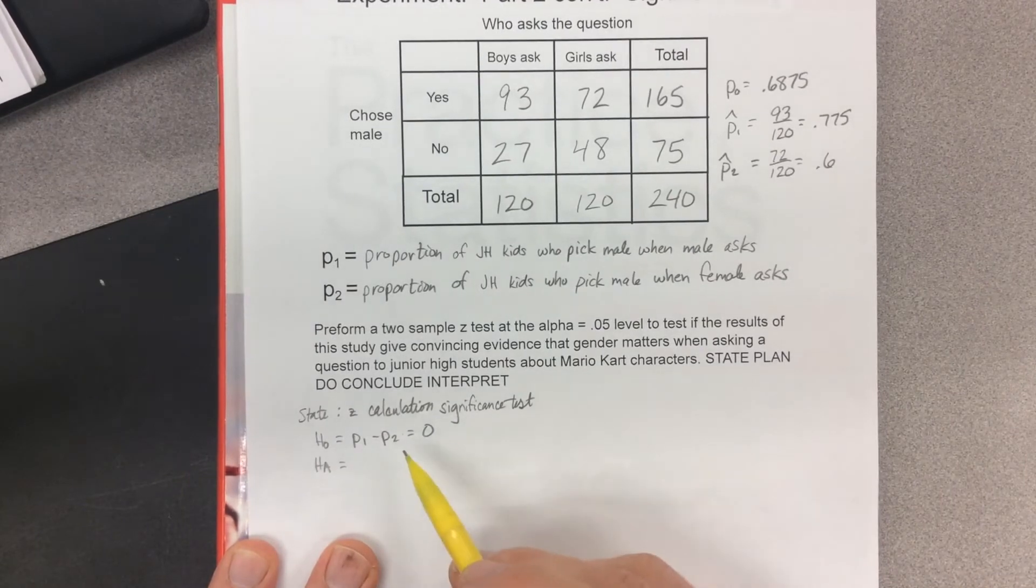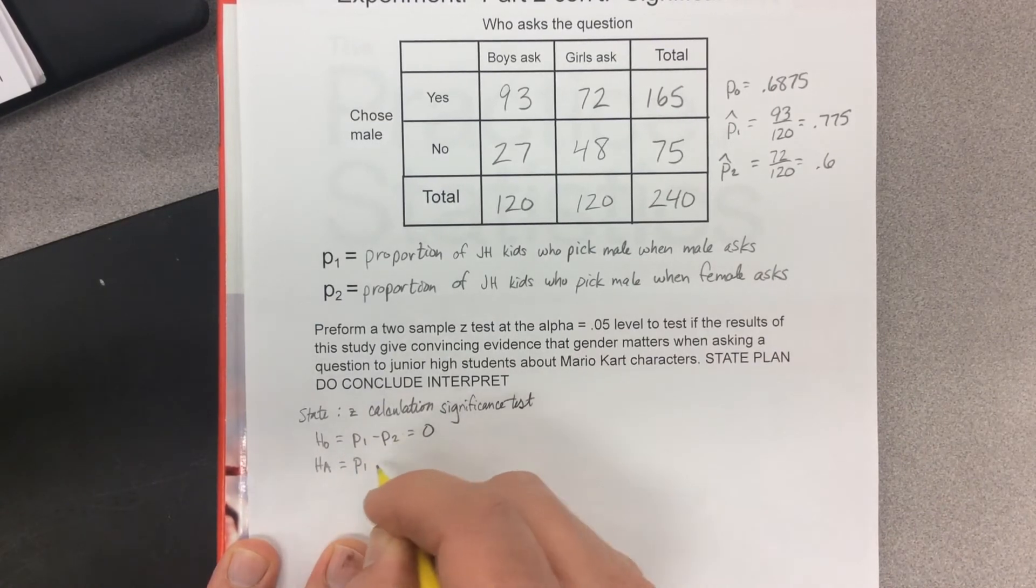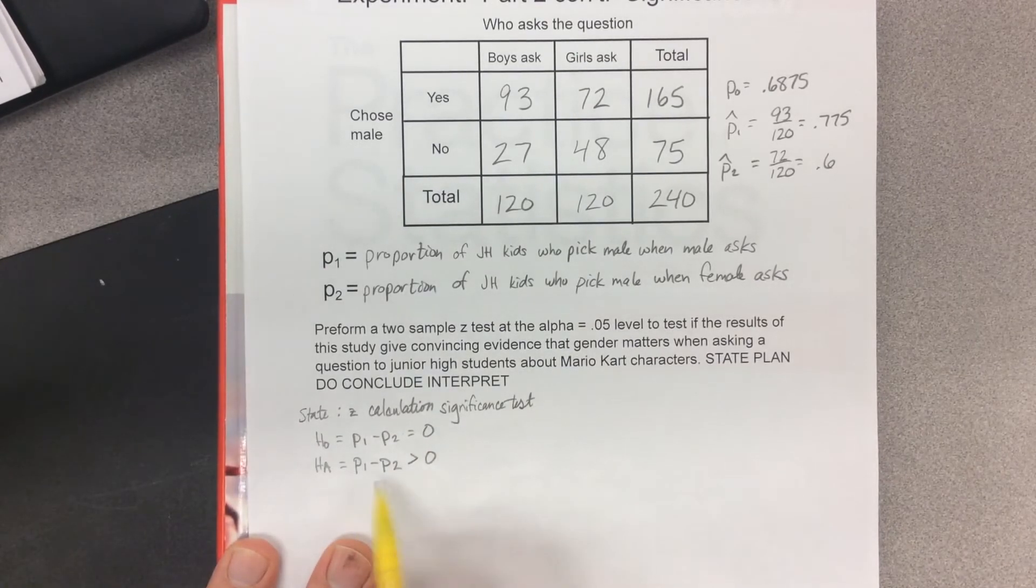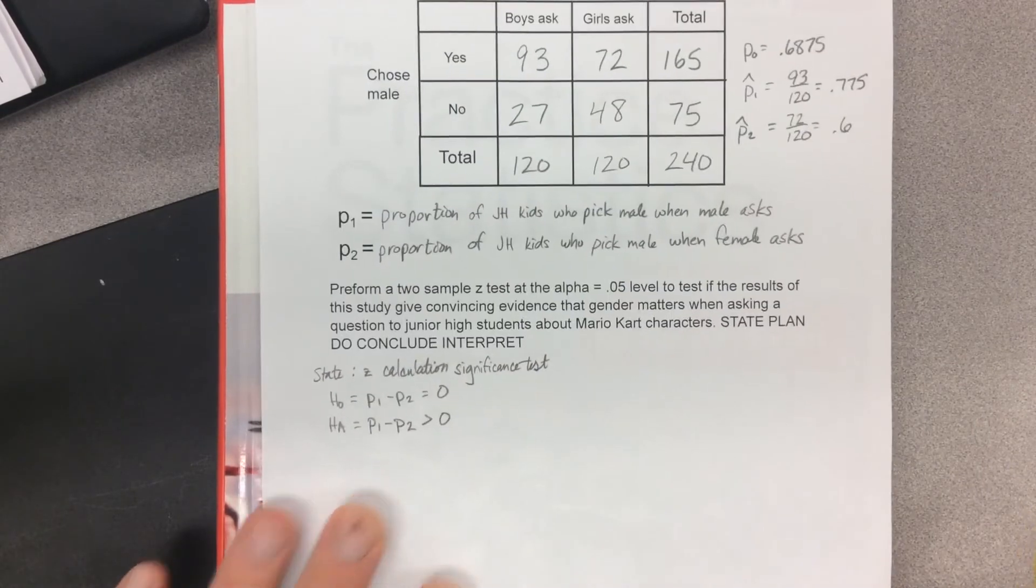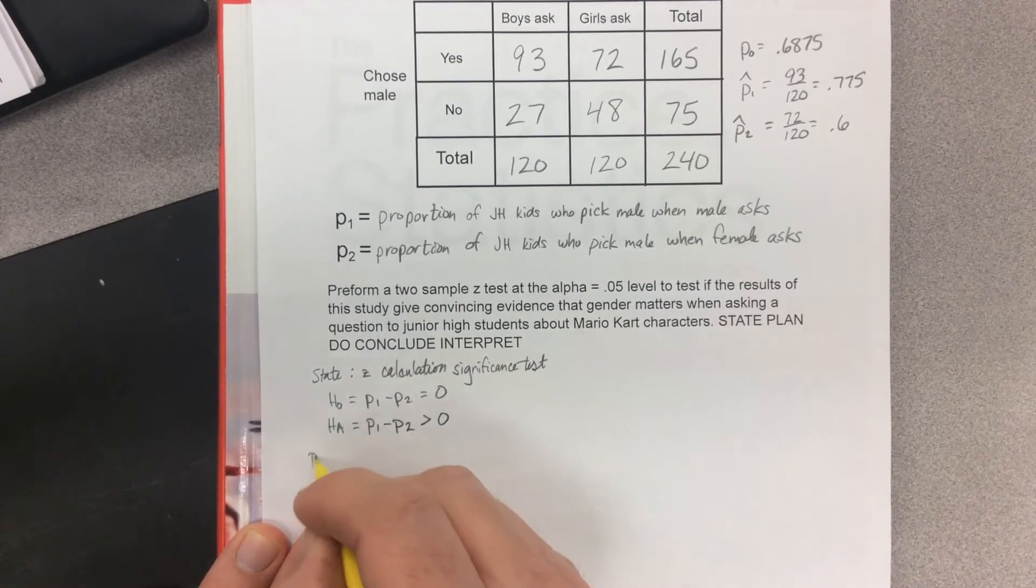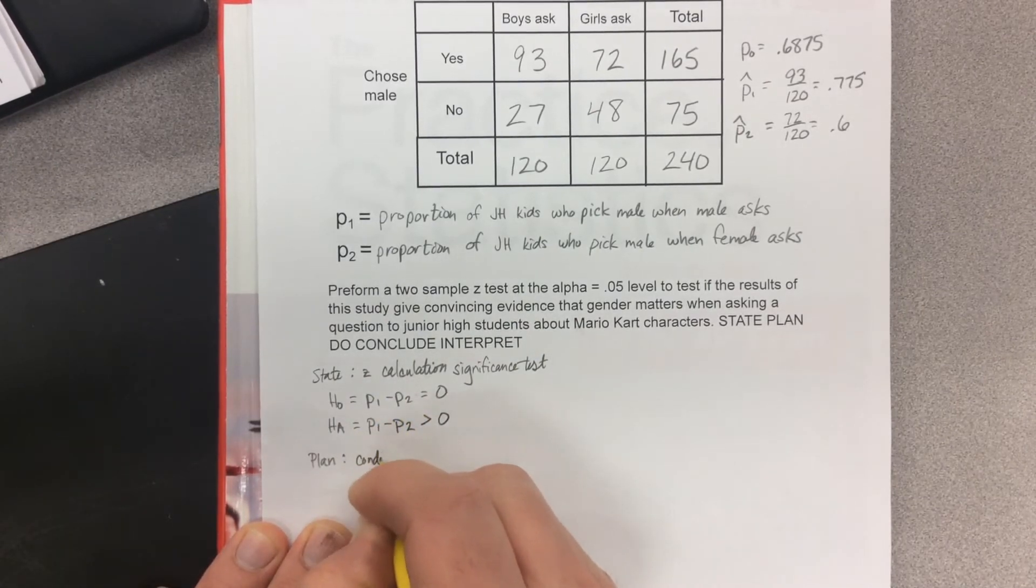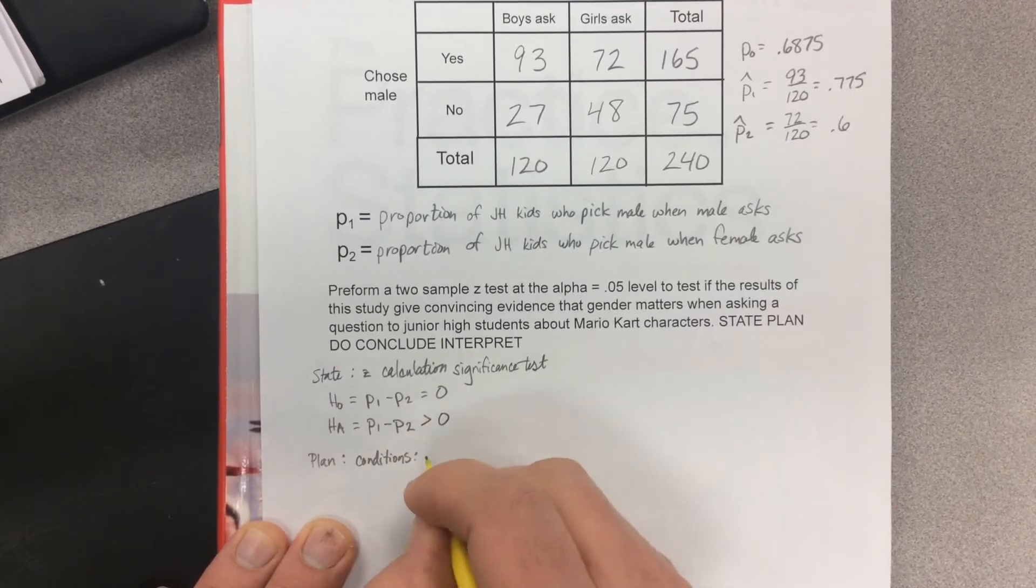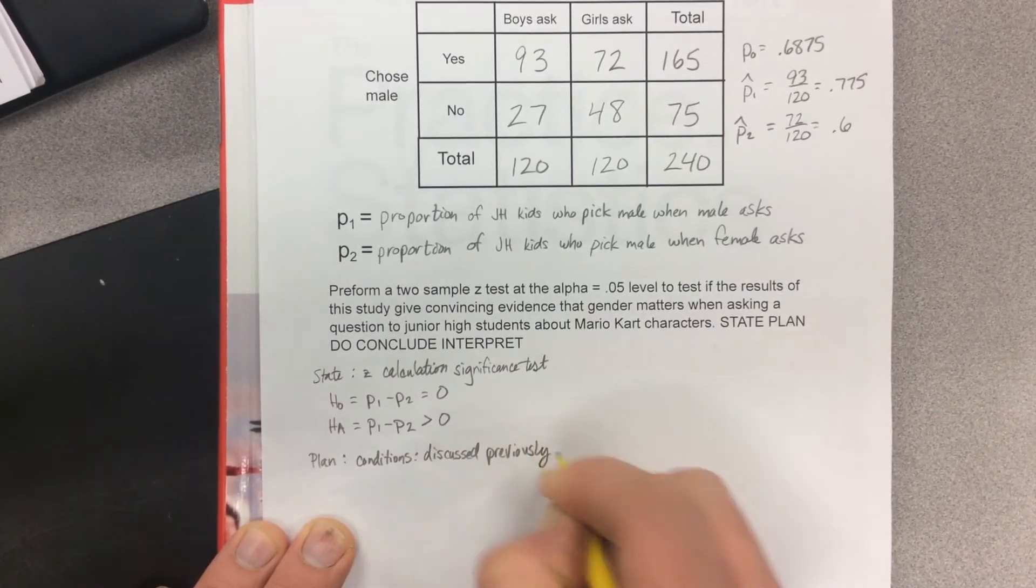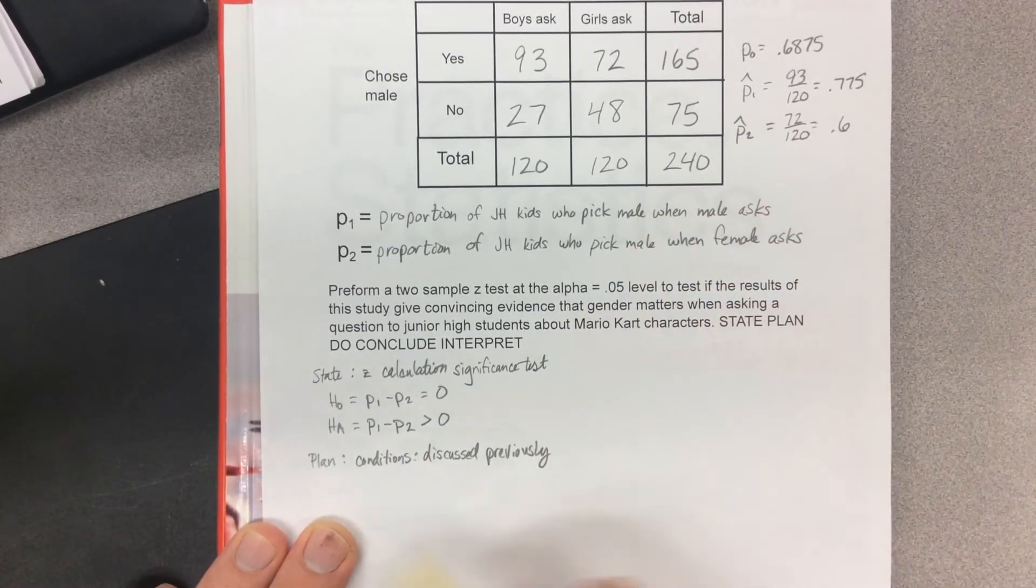Our alternative hypothesis is that if we subtracted them, since this one was bigger, the difference would be positive. We think P1 is bigger, so if we subtract them, alternatively we should get a number that is greater than zero. That is what we've been basing our numbers on the whole time. We have Z-calculation significance test, and then we're going to plan. For our plan, I don't feel like doing the conditions again, so I'm just going to put conditions discussed previously.